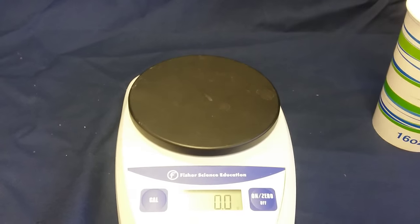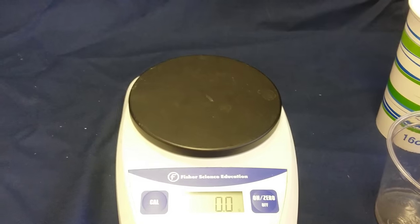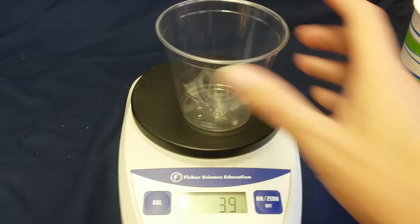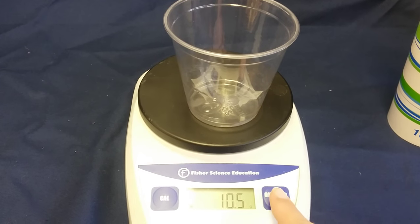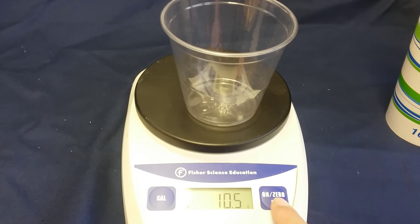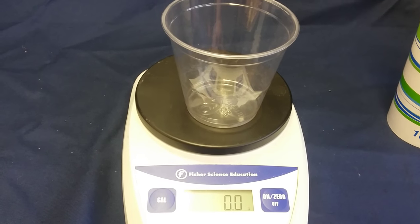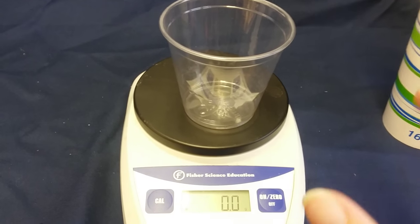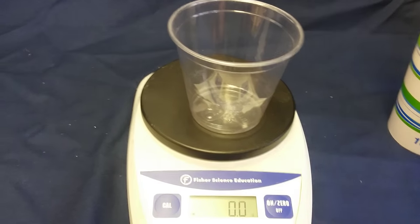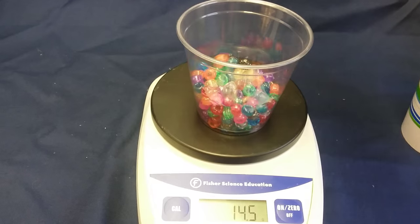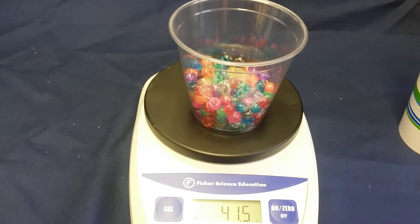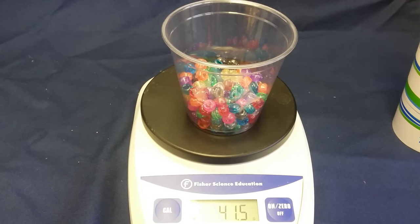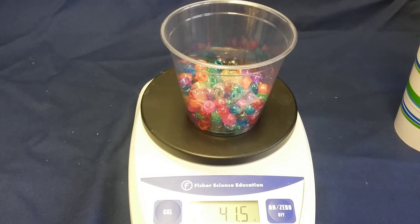I can do this another way too. First I can put the cup on the scale, press the on button which also says zero, and that will return the scale to zero. So now it's considering the cup a part of the scale. And there I have 41.5 grams of beads.